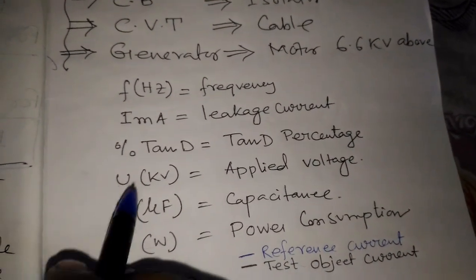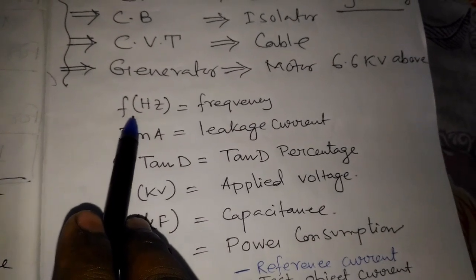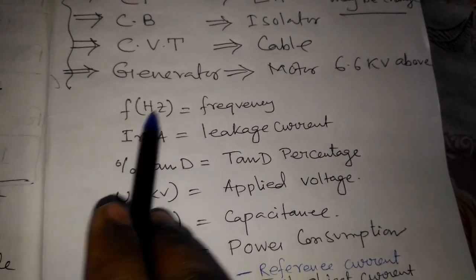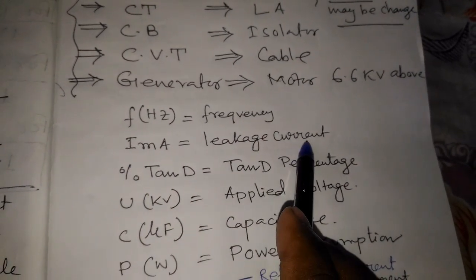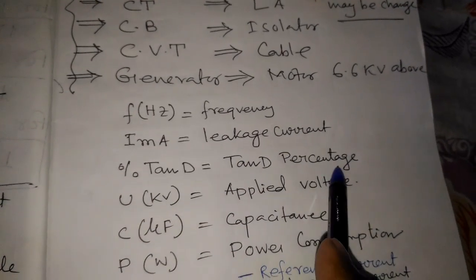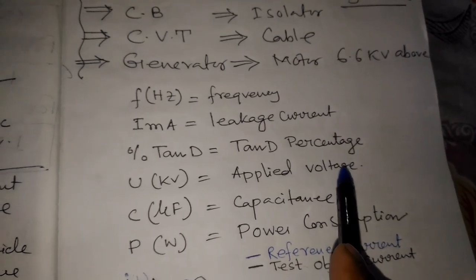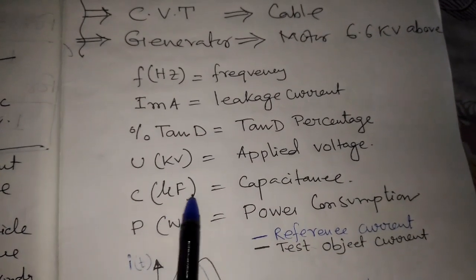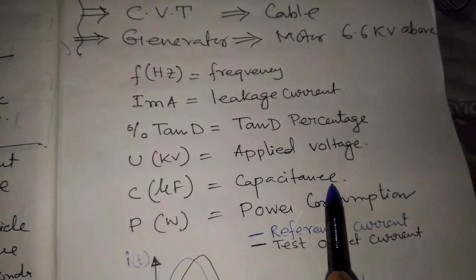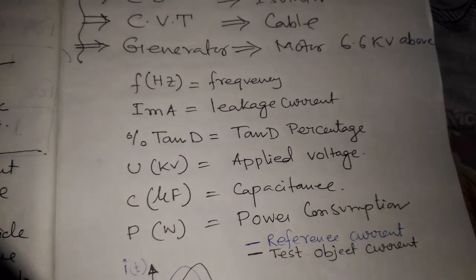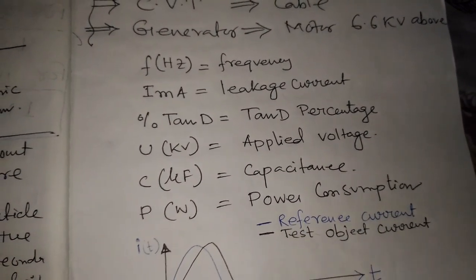After the Tan Delta test, using updated testing machines, we will get the following readings: the frequency applied, the leakage current flowing through the equipment, the Tan Delta percentage, the applied voltage to the terminal of the equipment under test, the capacitance C in microfarads between primary and secondary, and W — the power consumption.